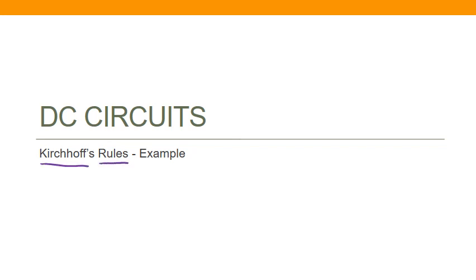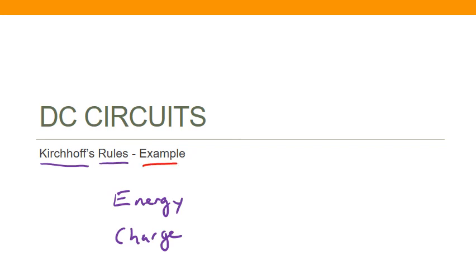Kirchhoff's rules give us a way of analyzing circuits when we can't reduce or use equivalents to reduce resistors. They are based on the idea of energy conservation and charge conservation — that we can't create or destroy charge anywhere in our circuit. I want to go through an example showing you how to use them and giving you the basics of how you set up the equations involved.